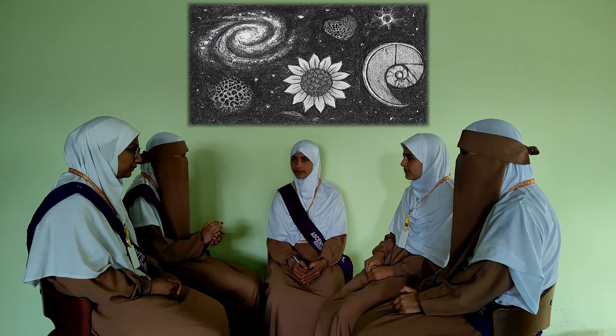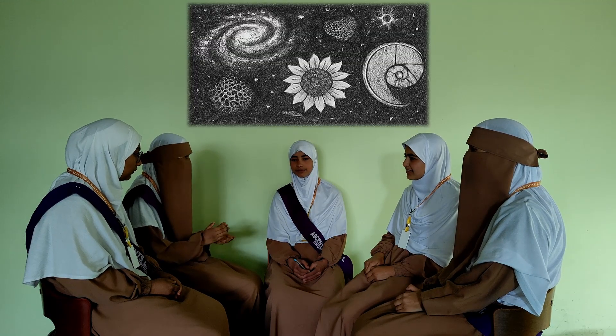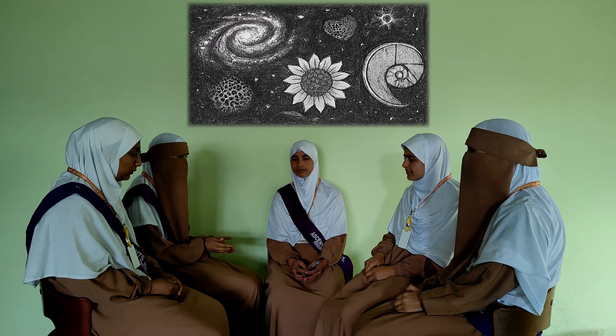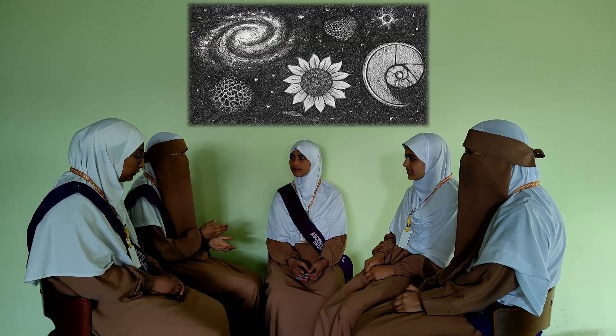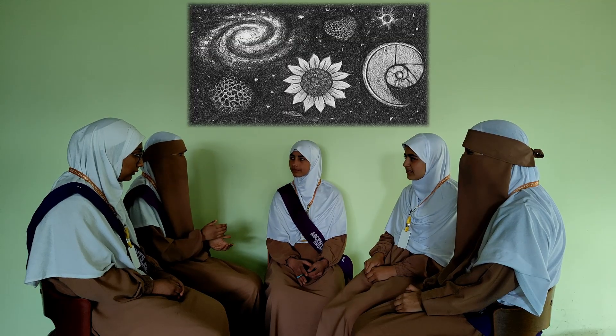Let's start with a simple question. Have you ever noticed some things in nature just look right? A sunflower, a seashell, even the spirals in galaxies — there's something beautifully consistent about them. Well, that's where Fibonacci numbers and the Golden ratio come in.